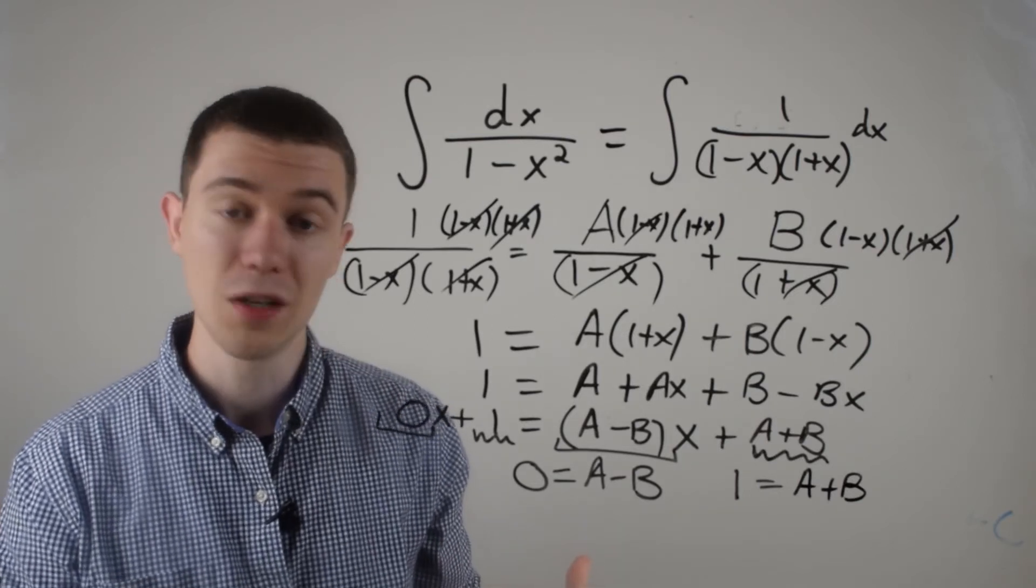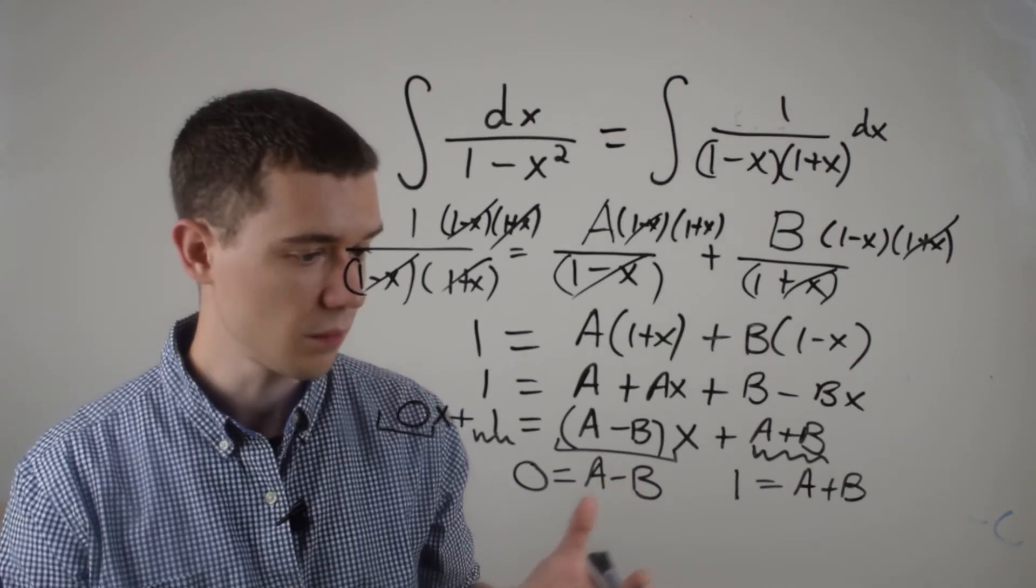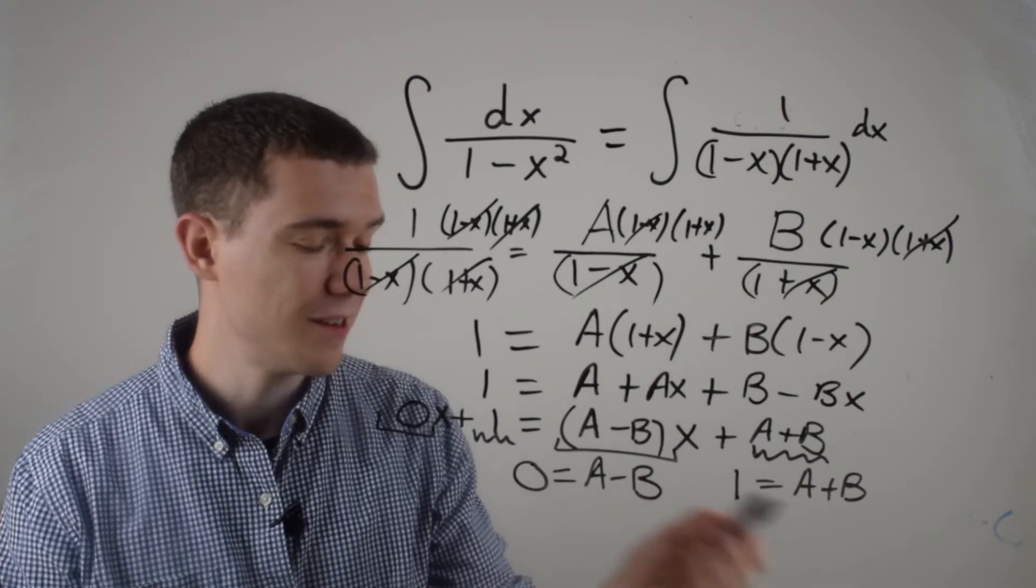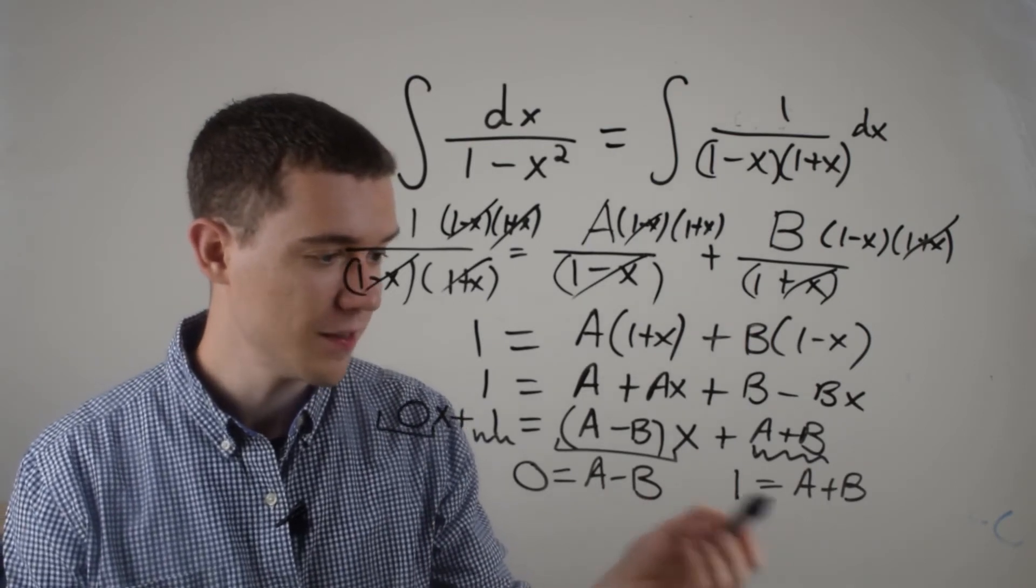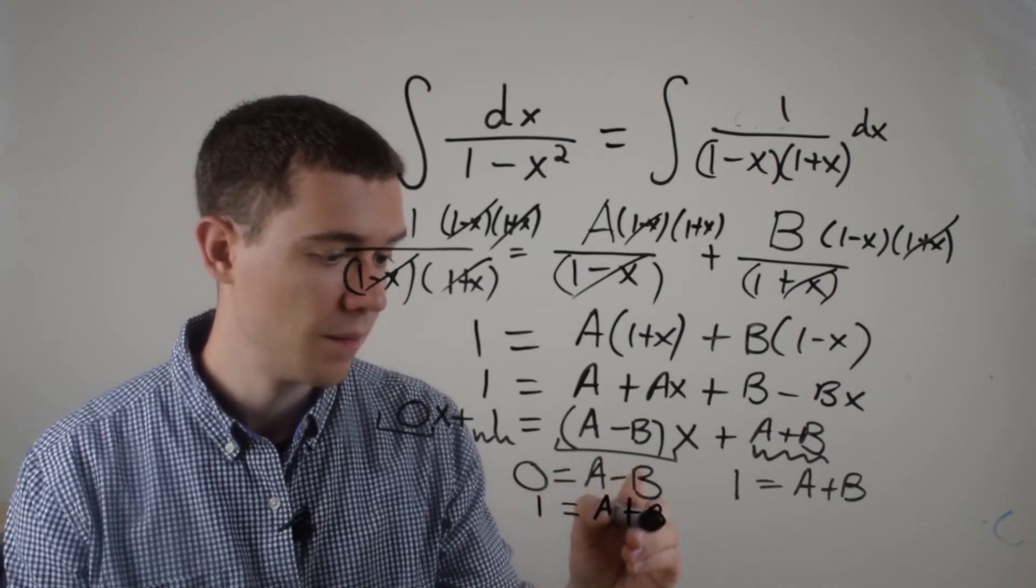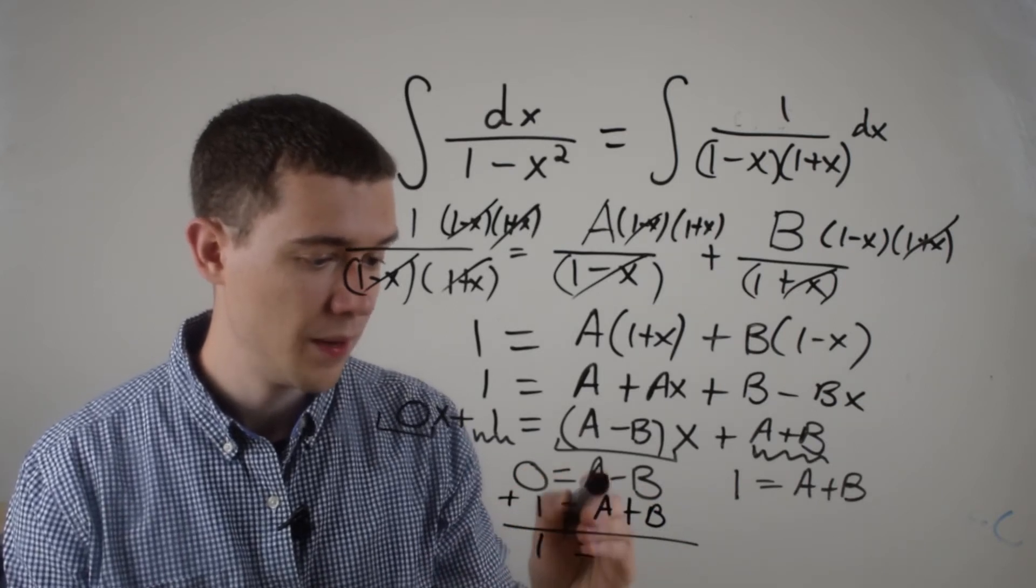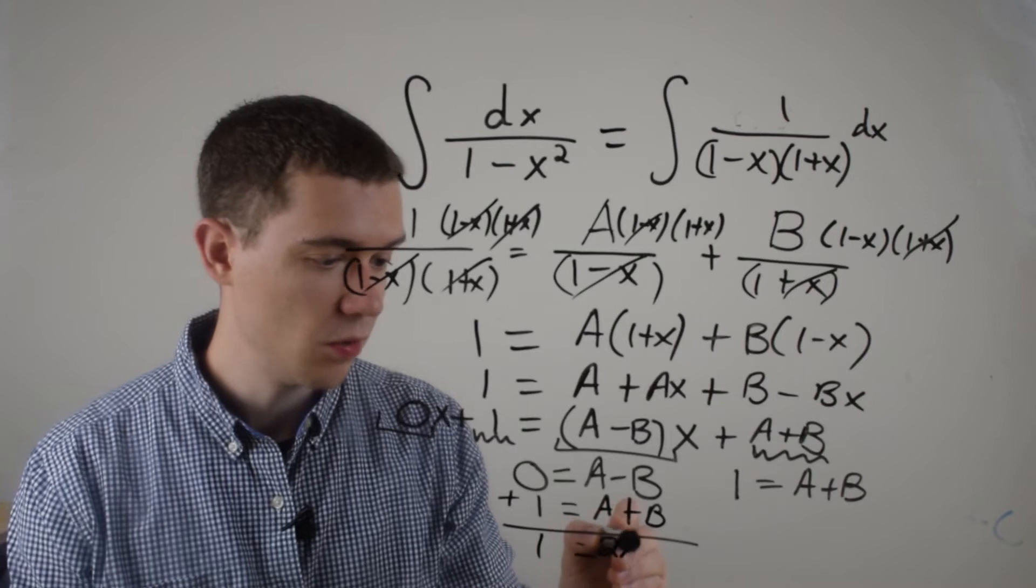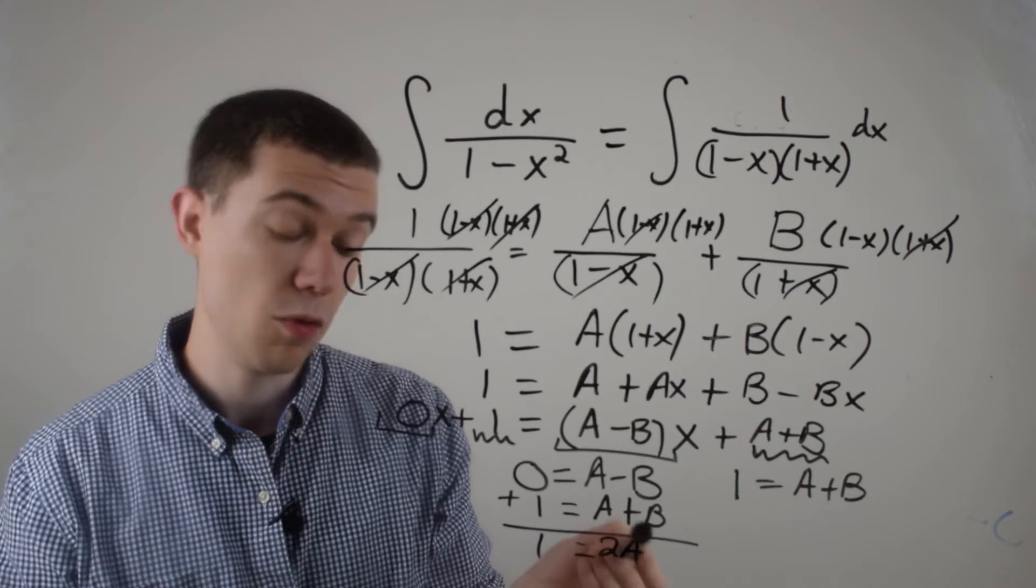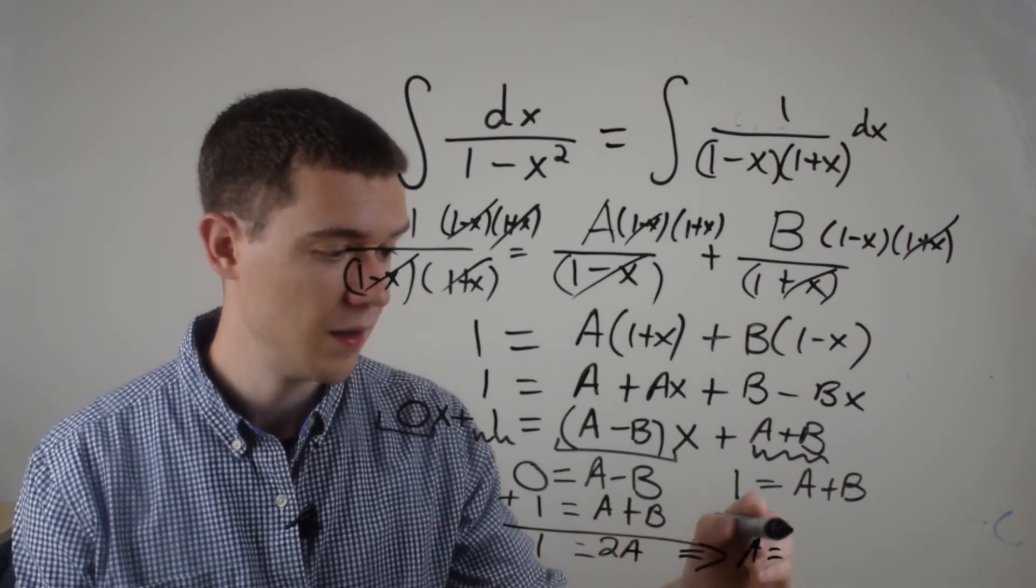And you've probably learned how to solve something like this pretty early in your algebra career. So there's a number of ways to do this too, right? Maybe the easiest would just be to add both of these equations. So if I simply rewrite this and I add these equations. Well, 0 plus 1 is 1. A plus A is 2A. Minus B plus B is no B. So I get 1 equals 2A. Well, this would mean the same thing as A is equal to a half.